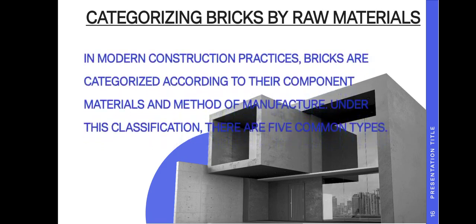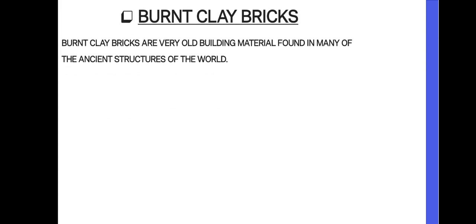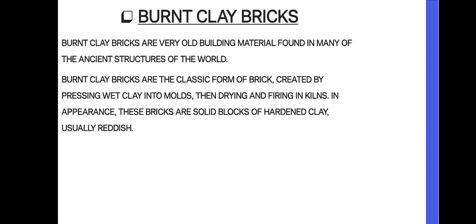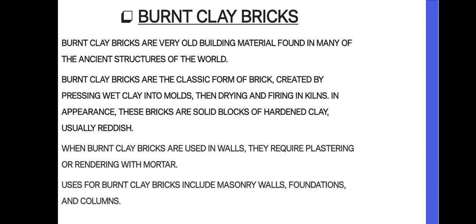In modern construction practices, bricks are categorized according to the component material and method of manufacture into five common types. Burnt clay bricks are the classic form of brick, created by pressing wet clay into molds, then drying and firing in kilns. In appearance, these solid bricks have the usual reddish color. When burnt clay bricks are used in walls, they require plastering or rendering with mortar. Uses for burnt clay bricks include masonry walls, foundations, and columns.